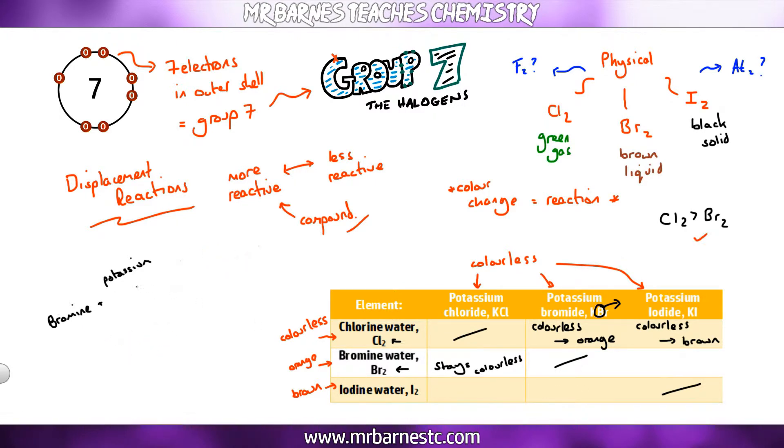But if I take bromine and add it into potassium iodide it goes from colourless to brown. So again I see a colour change so my word equation is going to be bromine plus potassium iodide goes to iodine plus potassium bromide.